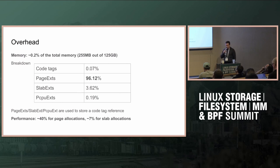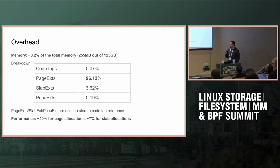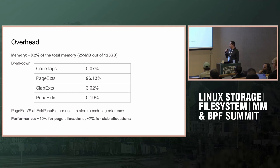All this overhead basically comes from the fact that we need to store a back pointer to the code tag, so that when we free the allocation, we decrement the associated counters. The second biggest overhead was performance overhead of 40% on page allocations. 7% of slab allocations is a small number, but very important because slab allocations are much more frequent.